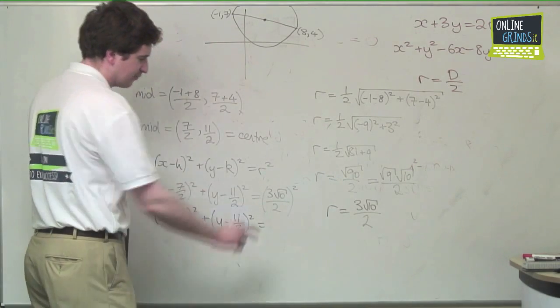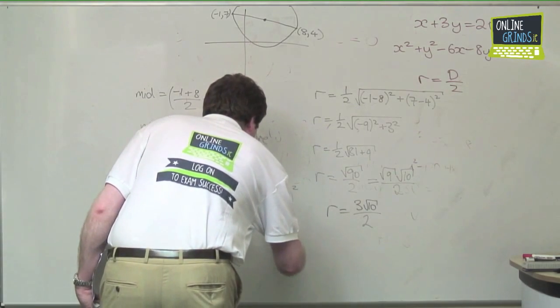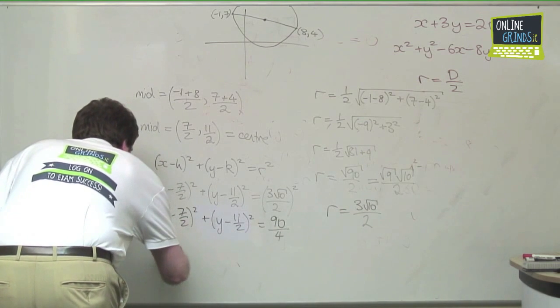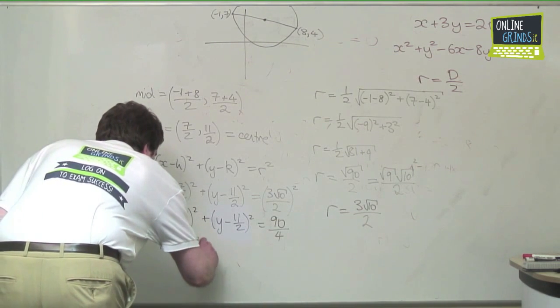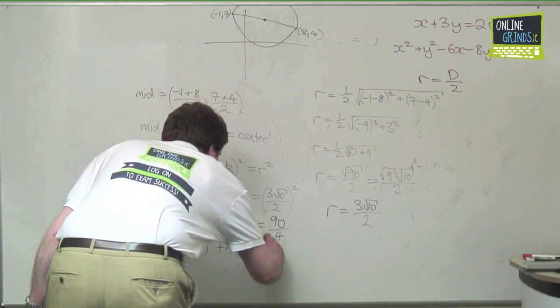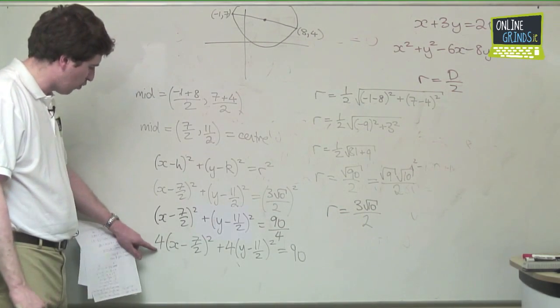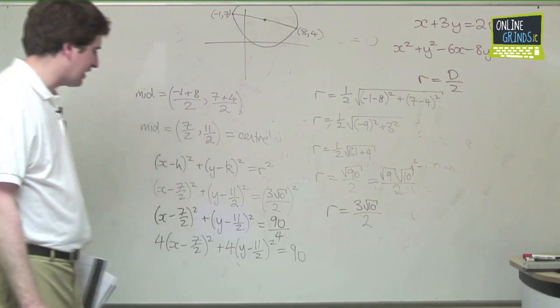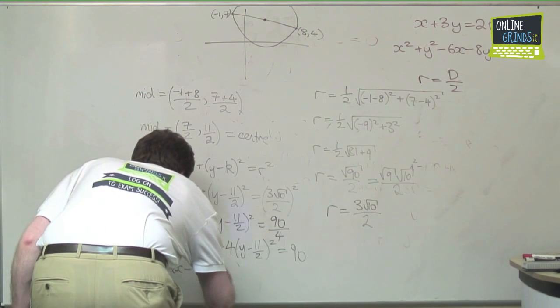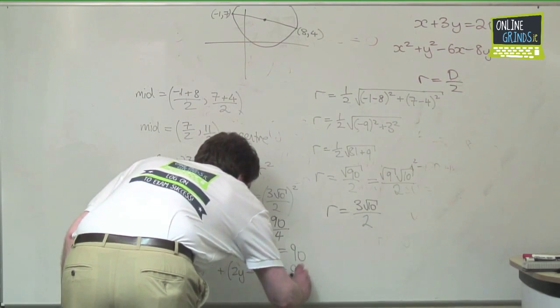x minus 7 over 2 all squared plus y minus 11 over 2 all squared. 3 squared is 9, root 10 squared is 10, 9 times 10 is 90, so we get 90 over 4. And let's put it into a lovely form. We get multiply everything by 4. That's 4 times x minus 7 over 2 all squared plus 4 times y minus 11 over 2 all squared, that's equal to 90.